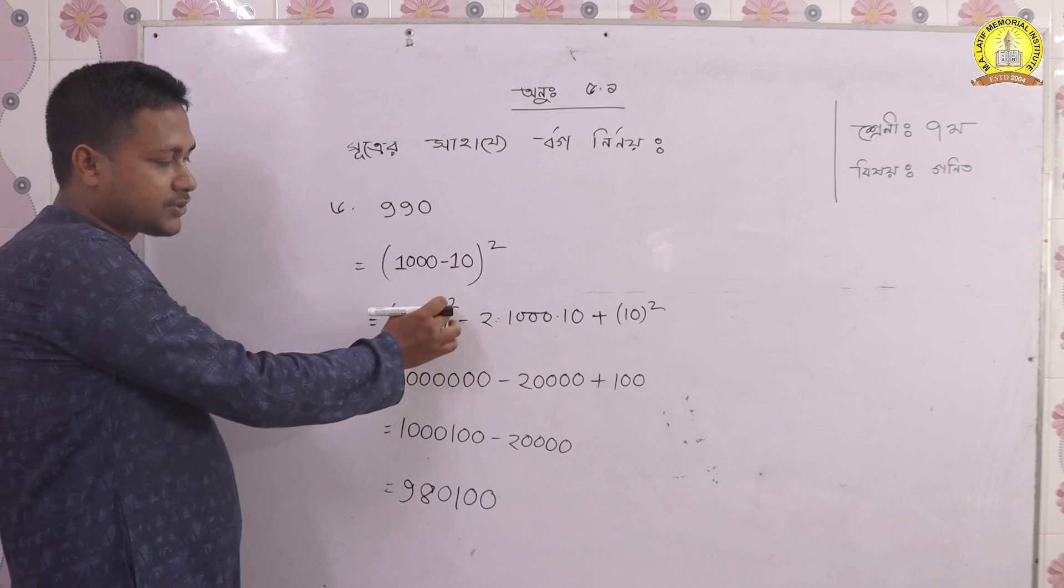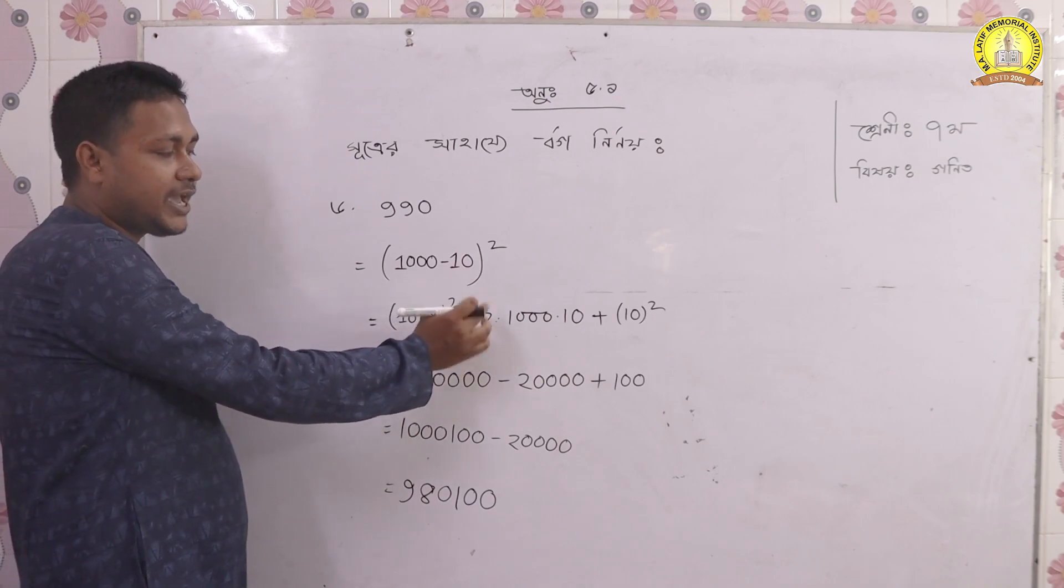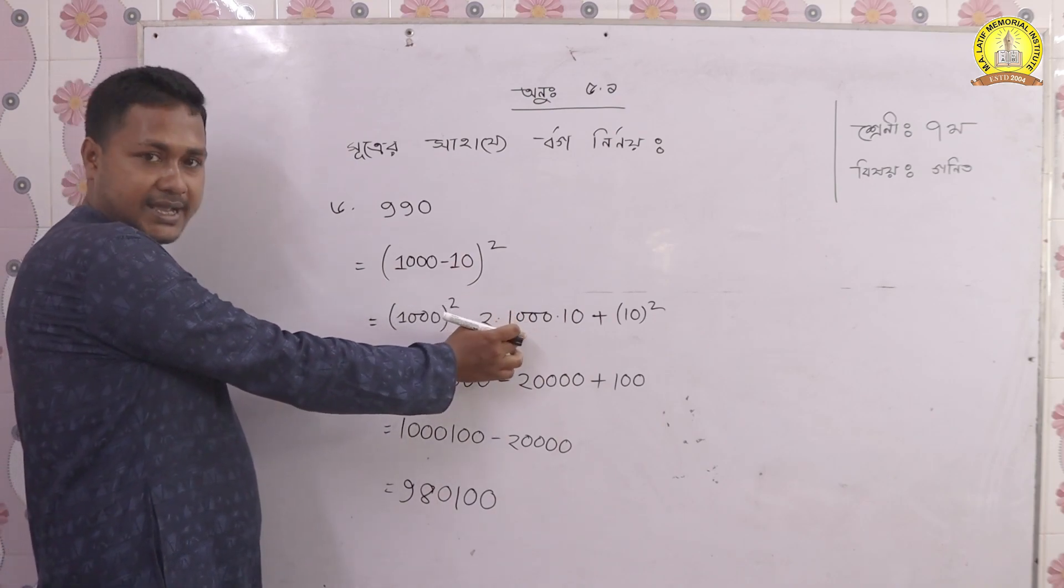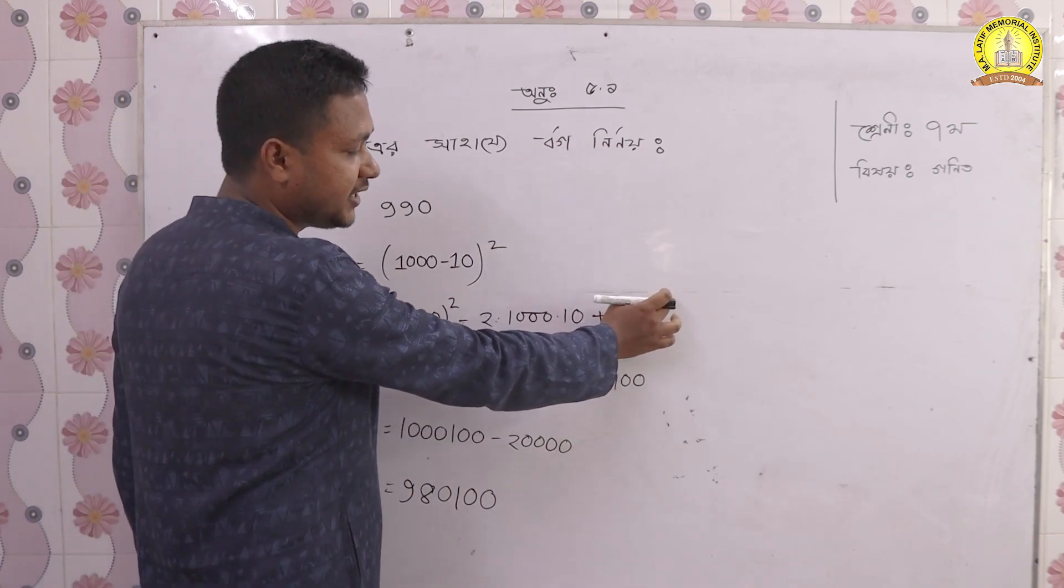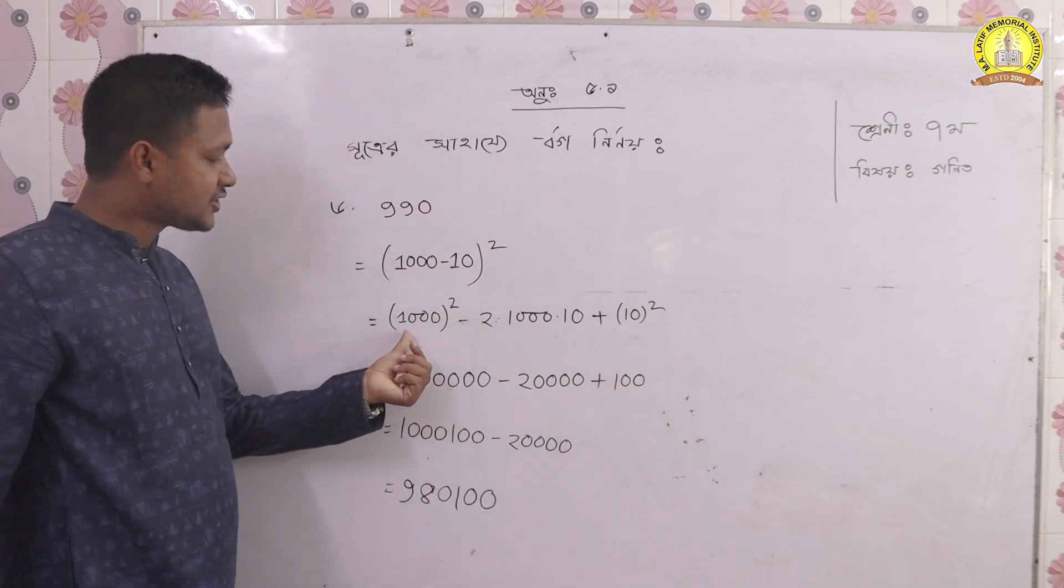So if we have a squared, we have 1000 squared minus 2ab. Then a equals 1000, b equals 10. We have b squared, so if we have b squared, we have 1000 squared, then we have 2000 squared.